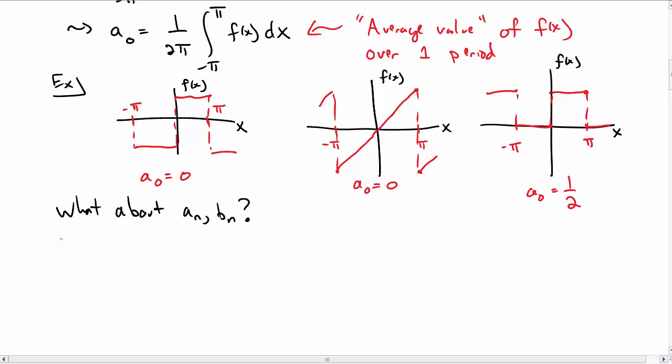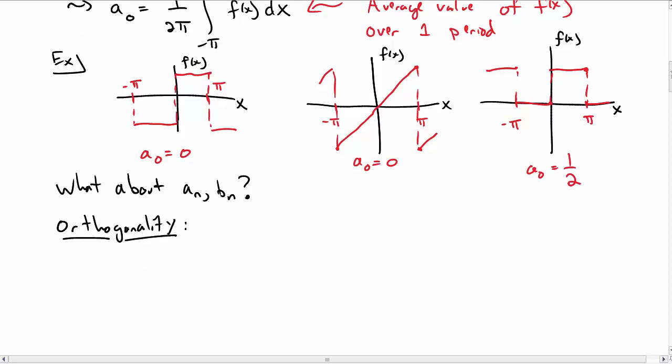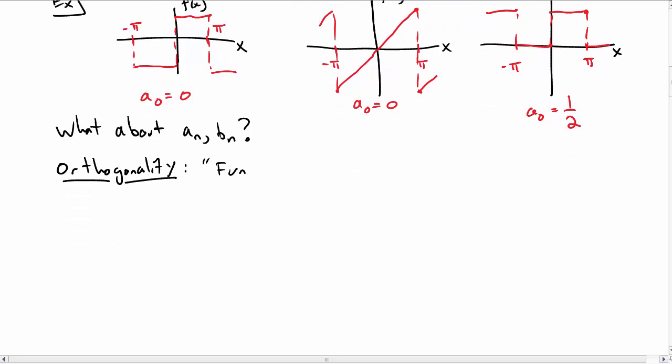But what about the a sub n and the b sub n? Well, we're just going to solve for the a sub n right now, but we need to use some conditions about sines and cosines, namely their orthogonality. And so here are some more fun facts about cosines and sines. So let's integrate from negative π to π, cosine of nx times cosine of mx dx. And let's specify that m and n are integers here.